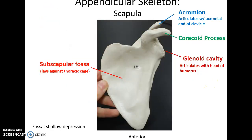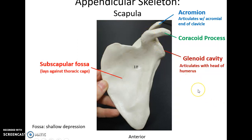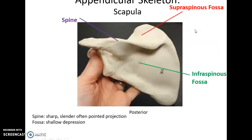The scapula, a large triangular-shaped structure, has a large smooth subscapular fossa that lies on the thoracic cage. It has a glenoid cavity on its lateral side that articulates with the head of the humerus. Coming off of the glenoid cavity is the coracoid process, and then coming off of the spine you have the acromion. This process articulates with the clavicle.